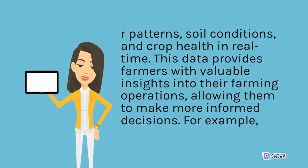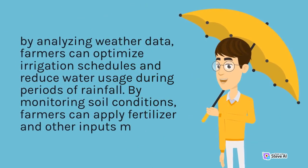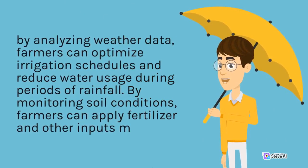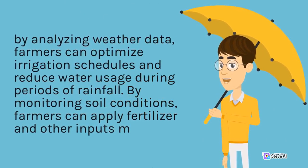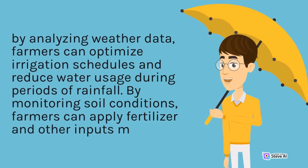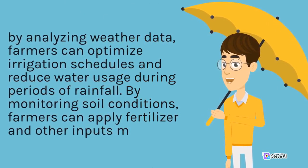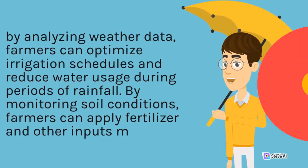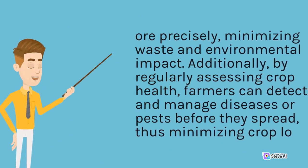For example, by analyzing weather data, farmers can optimize irrigation schedules and reduce water usage during periods of rainfall. By monitoring soil conditions, farmers can apply fertilizer and other inputs more precisely, minimizing waste and environmental impact.